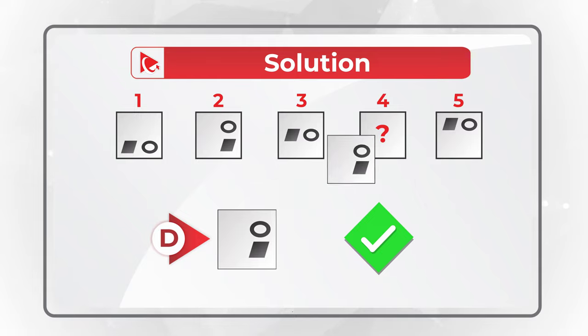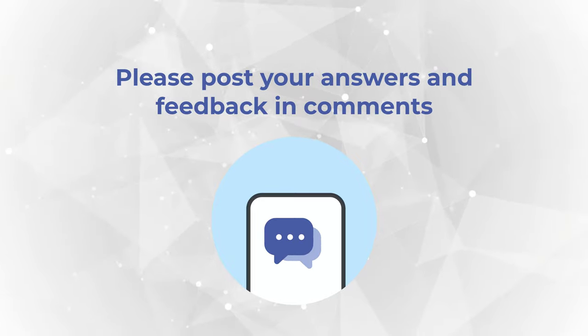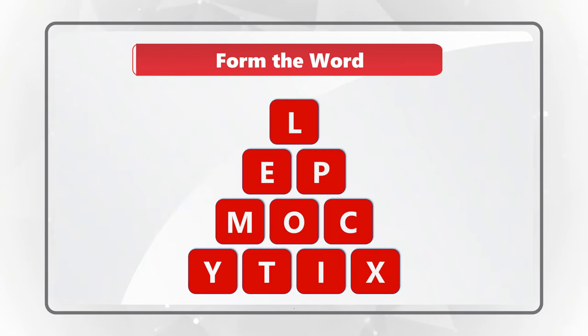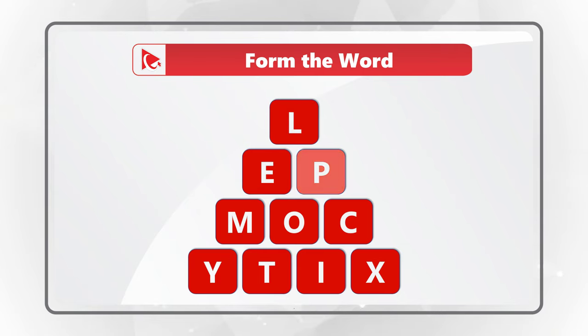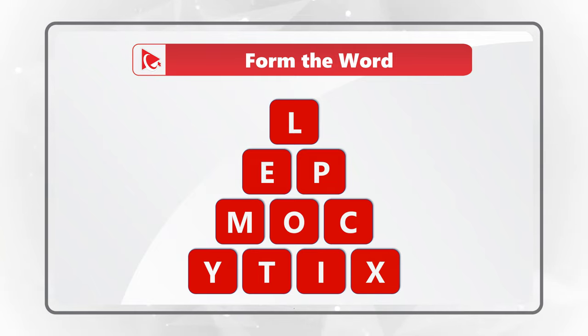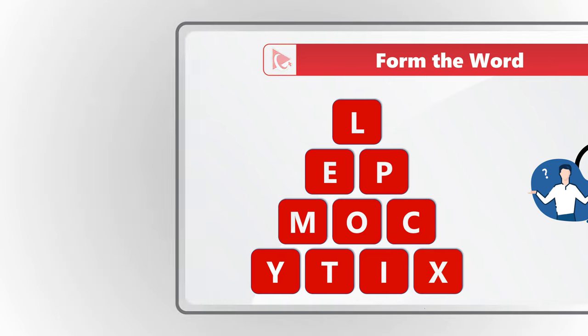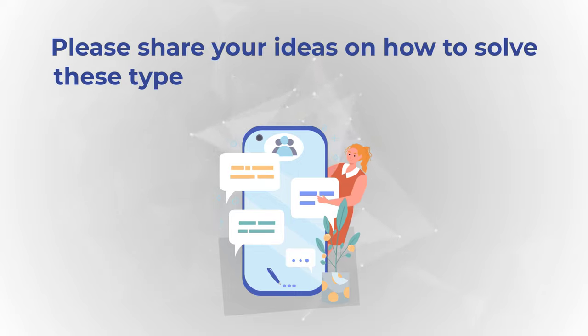Hopefully you've nailed this question and now know how to answer similar problems on the test. If you need more problems with solutions, please make sure to check out the description of this video. Here's a question for you to practice. You're presented with 10 letters and you need to form a word from the English dictionary using all the letters only once. The letters are L, E, P, M, O, C, Y, T, I, X. Give yourself a little bit of time. The word somehow represents the fact that there are 10 letters. Please post your answer in comments so I can give you my feedback. Thanks for participating and good luck.